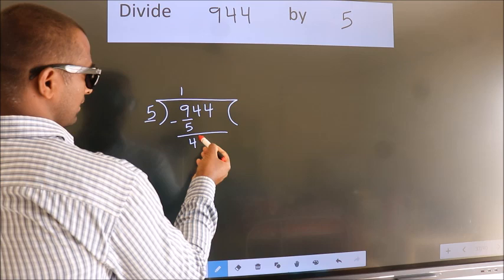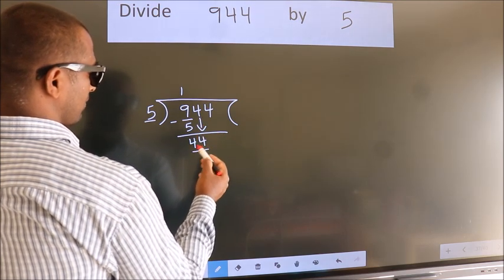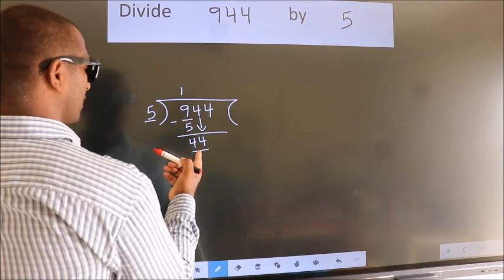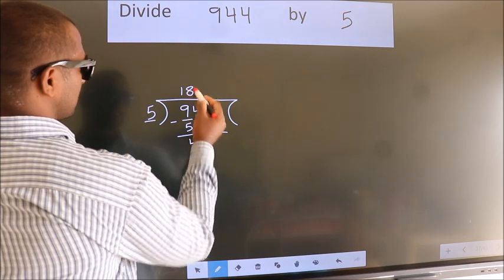After this, bring down the beside number. So 4 down. So 44. A number close to 44 in 5 table is 5 times 8 is 40.